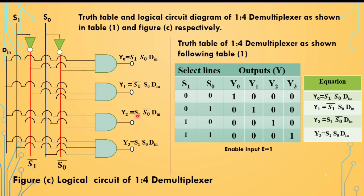For y2, the expression is s1 · s0_bar · din, where s1 is 1 and s0 is 0. So one input terminal of the AND gate is connected to the s1 line, another is connected to s0_bar, and din is connected to the din line. For y3, both select lines are 1, 1, giving s1 · s0 · din. One terminal is connected to s1, another to s0, and one terminal is connected to din.